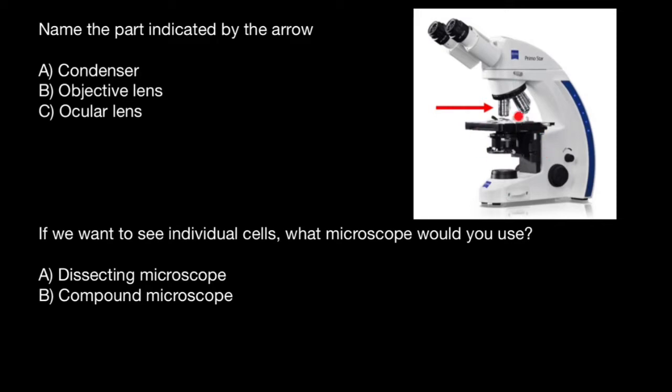Condenser would be this part of the microscope. Ocular lenses would be this part of the microscope. And this part of the microscope we call objective lenses.